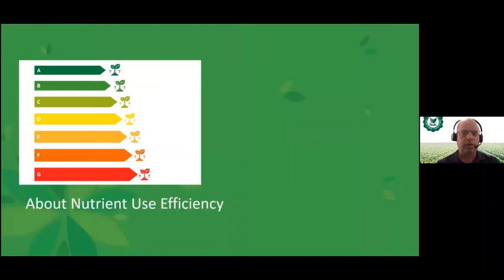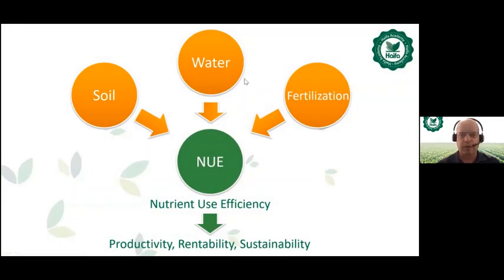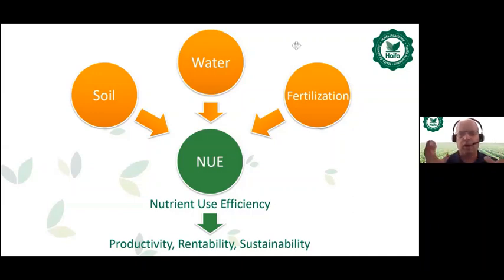When talking about nutrient use efficiency, we all know this kind of scale we see in the home appliance or motor car industry, where you can place a product based on its specific efficiency. By the end of this webinar, most of you will place our product at the top green zone. There are many aspects and things that can influence nutrient use efficiency — soil, water, fertilization method — and it directly influences productivity and sustainability.